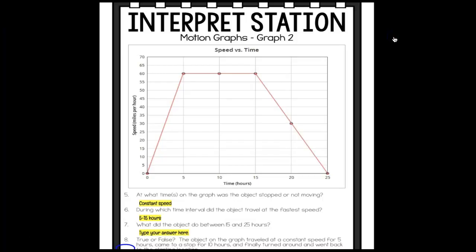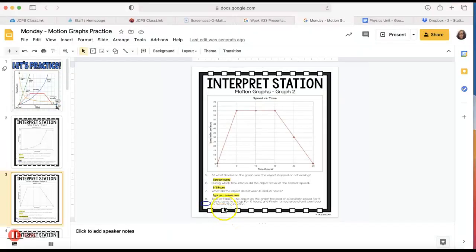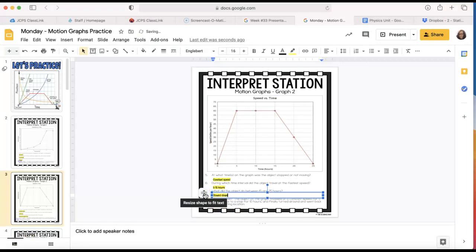Next it says, what did the object do between 15 and 25 hours? So 15 through 25 hours, it looks like it was going 60 miles per hour, but then it went down to 25 miles per hour, then it went down more and it's at 0 miles per hour. So the object slowed down. For number 7 you will write slowed down.